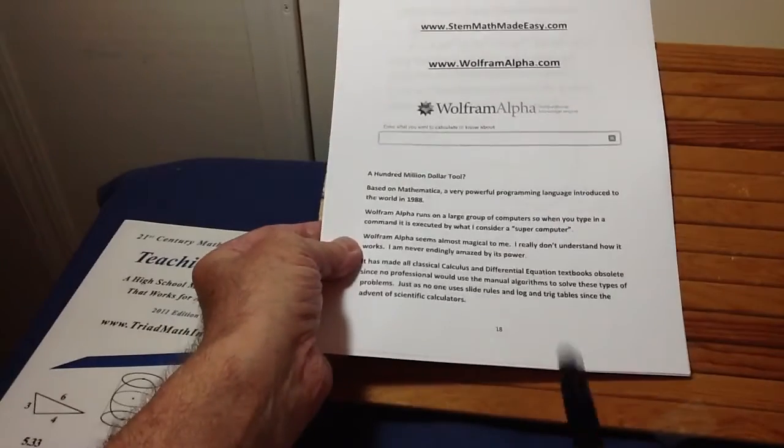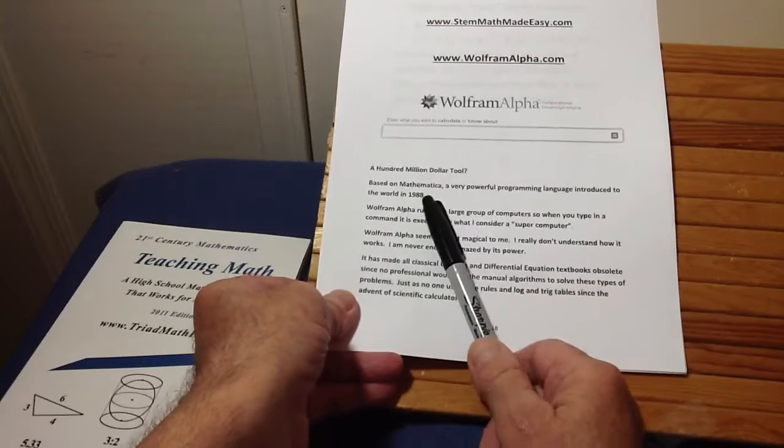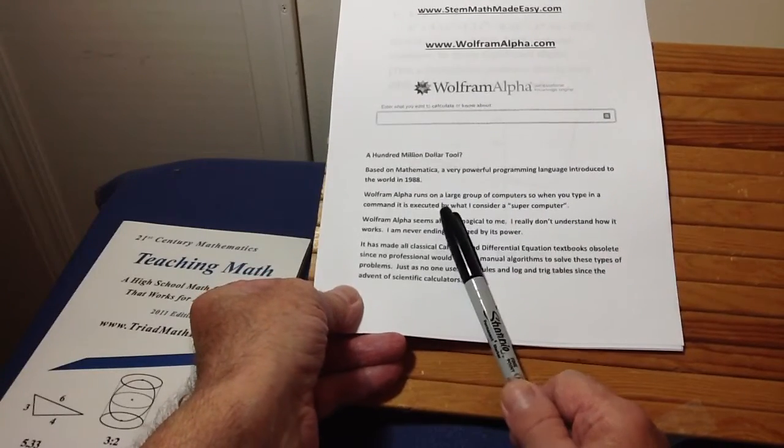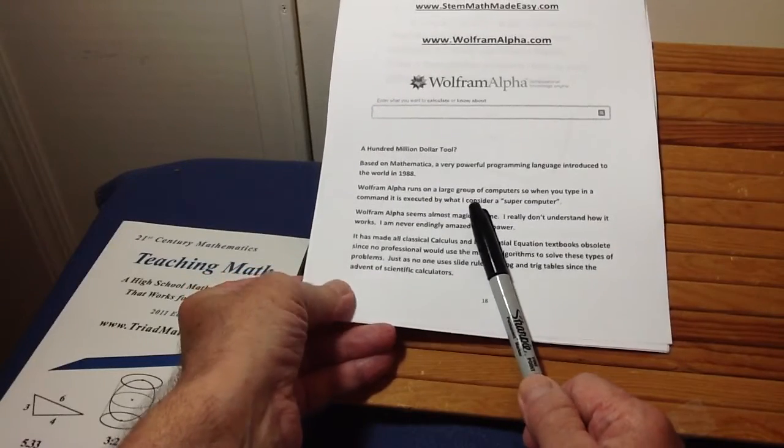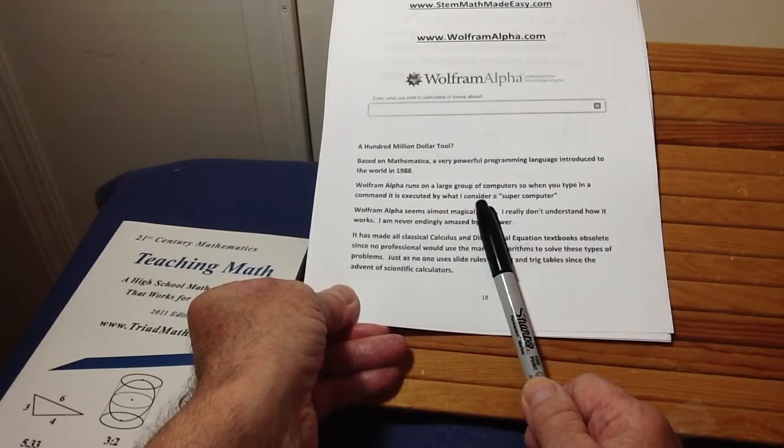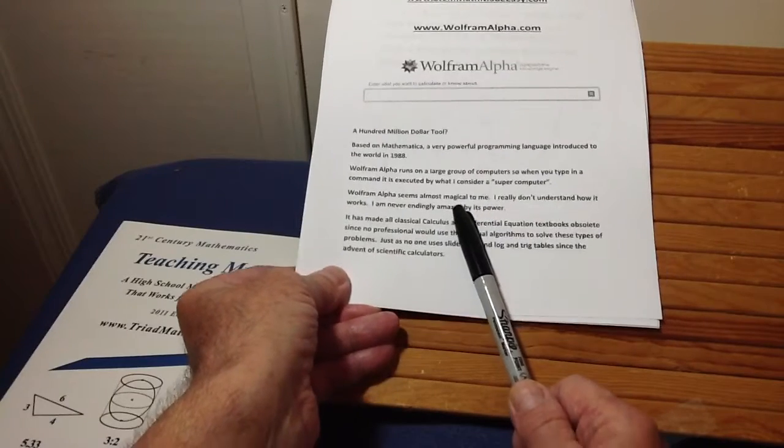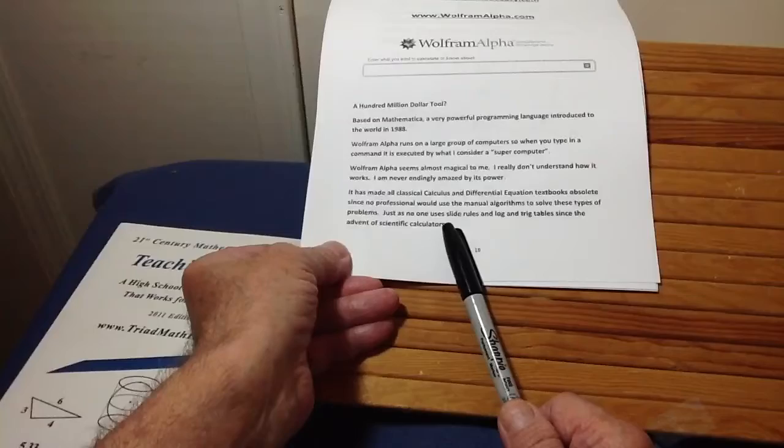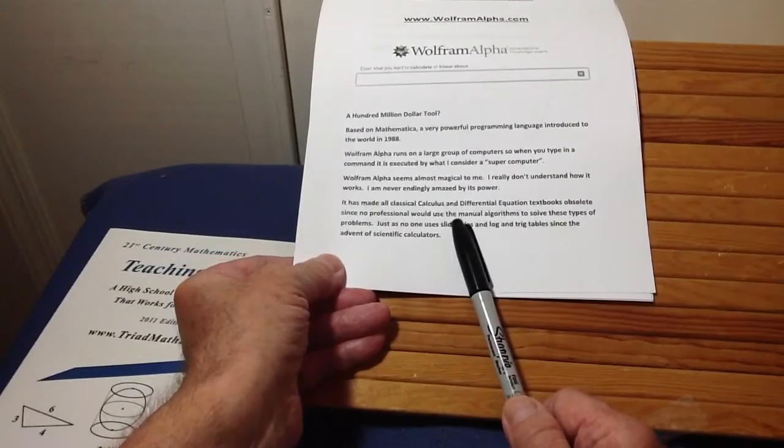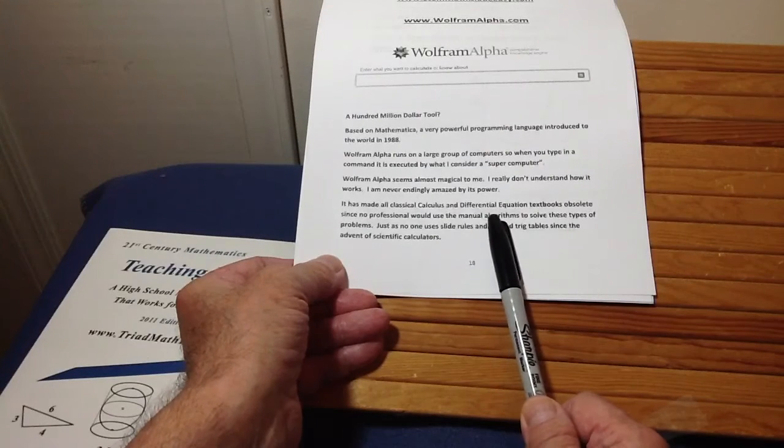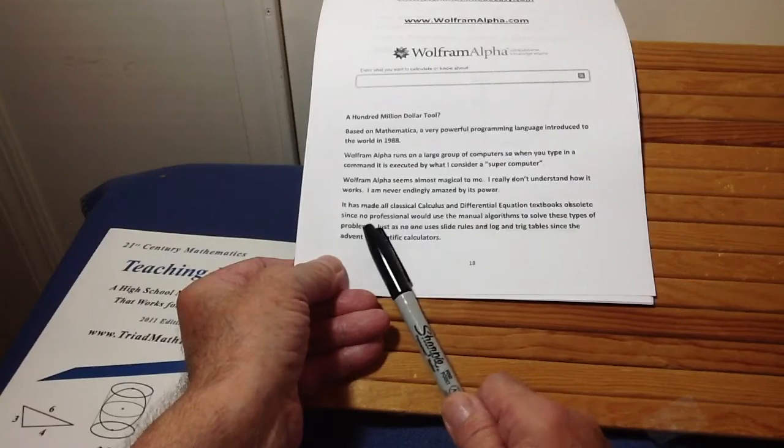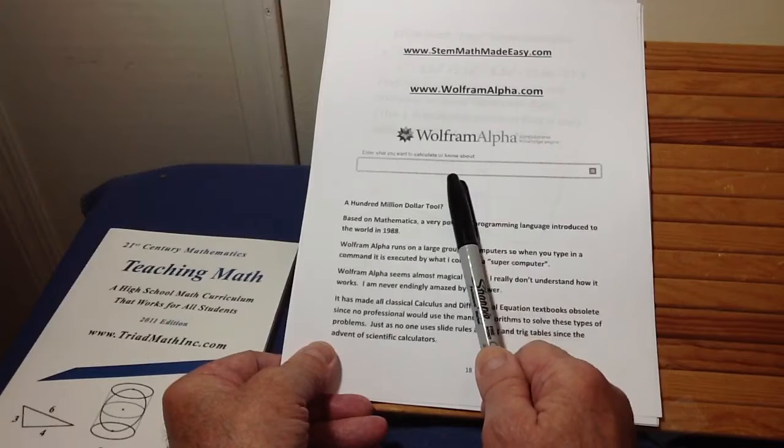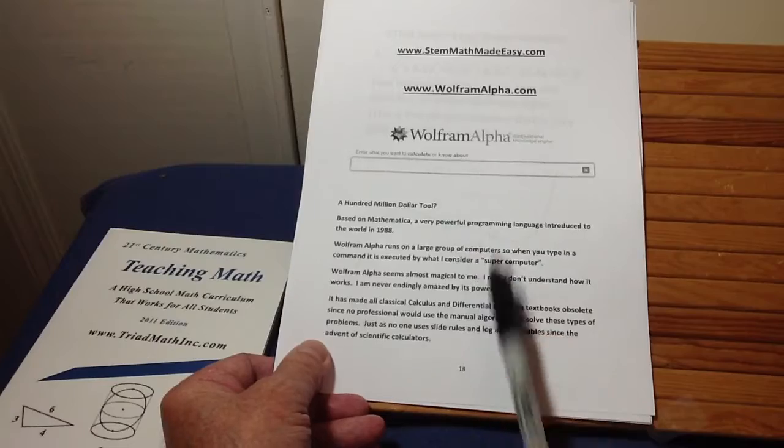If you go to wolframalpha.com, you'll see this come up. This is the modern tool that makes this all so easy. I consider this like a $100 million tool. It's free for you to use on the internet, but it's based on something called Mathematica, which is an extremely powerful programming language introduced back in 1988 by Stephen Wolfram. Wolfram Alpha runs on a very large group of computers. When you type in a command, your problem gets solved by what I consider a supercomputer with this fantastic Mathematica. Wolfram Alpha seems almost magical to me. I really don't know how it works. I'm endlessly amazed by its power.